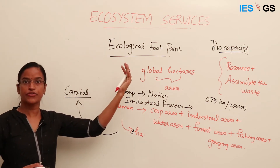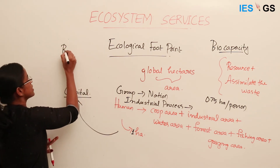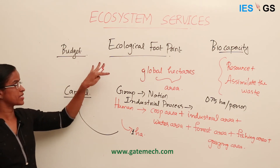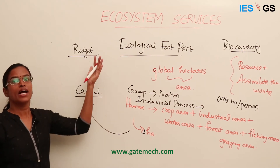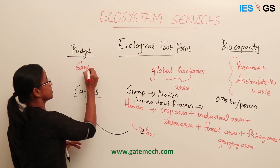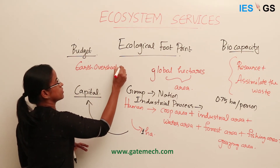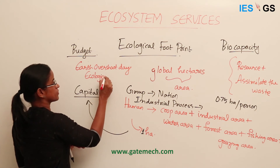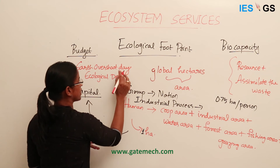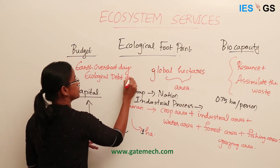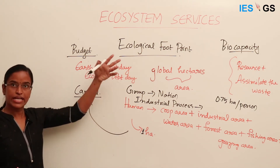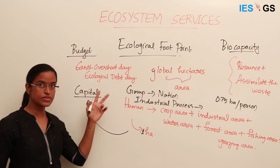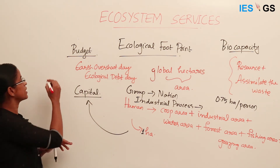This means that at one particular point of time the earth's budget will exhaust. If you calculate the budget for one year — this much biocapacity the earth can provide — and we are consuming it faster, that day is called Earth Overshoot Day. This day is observed every year by an NGO, and every year it falls around August.